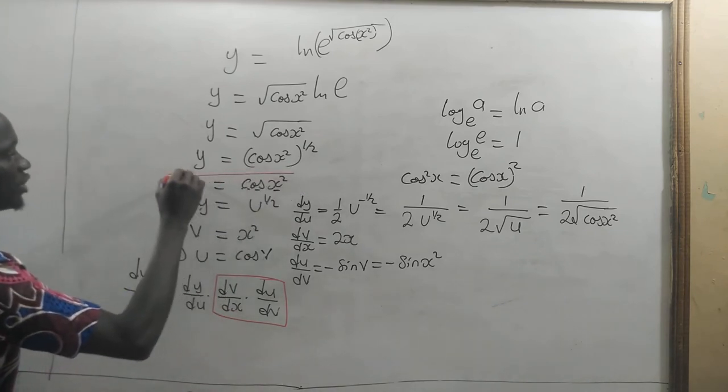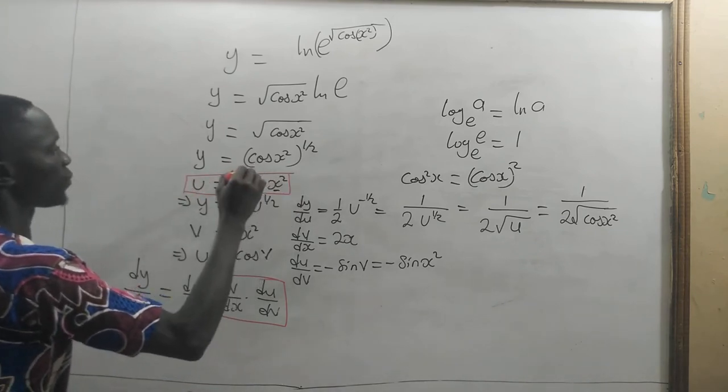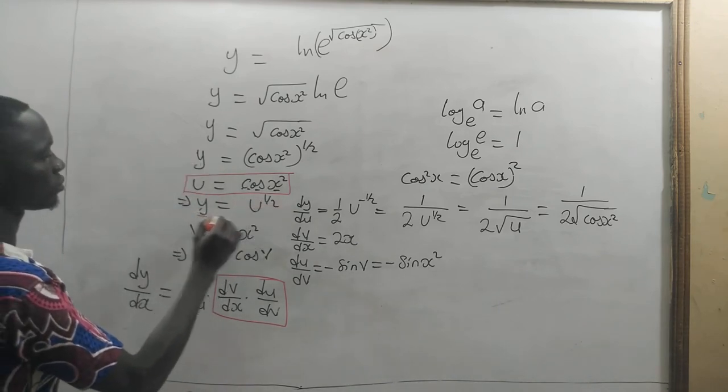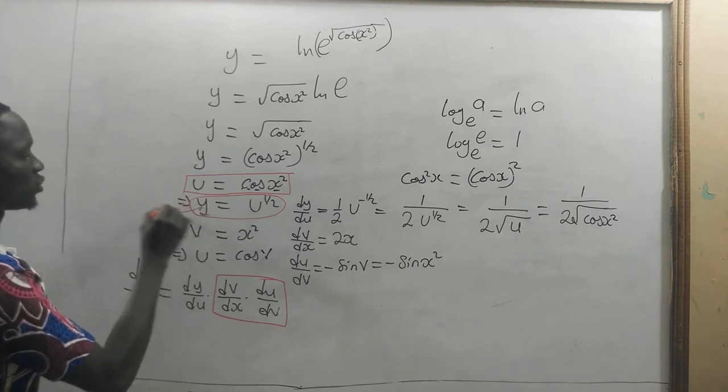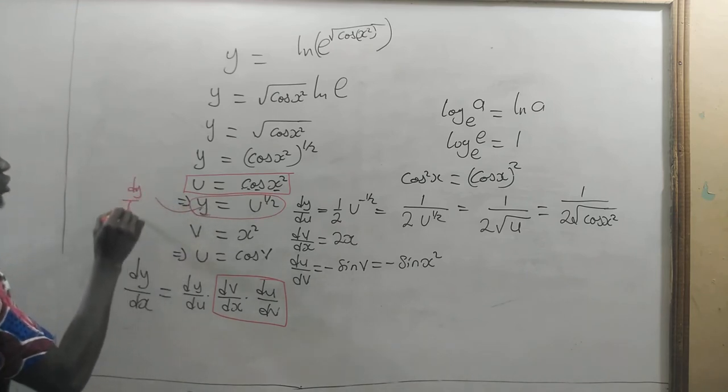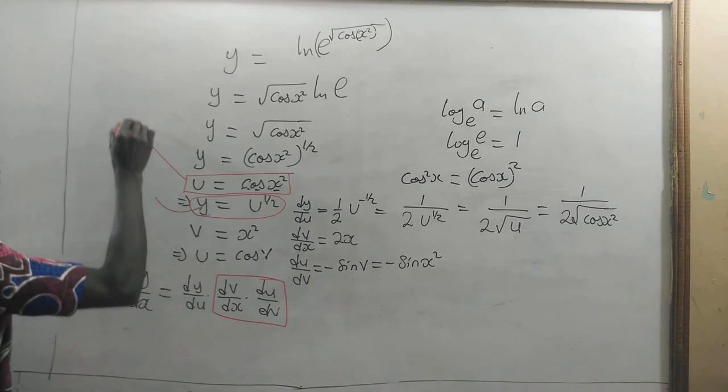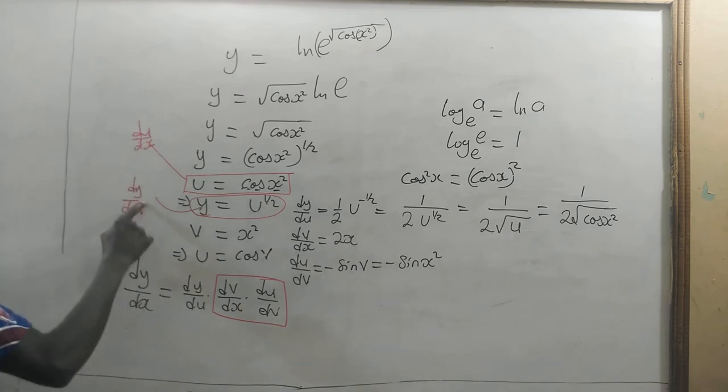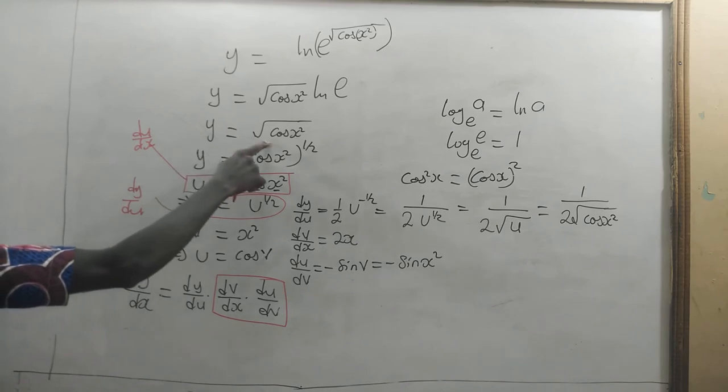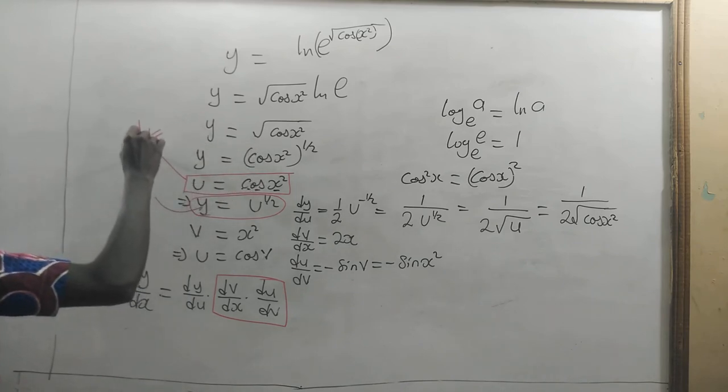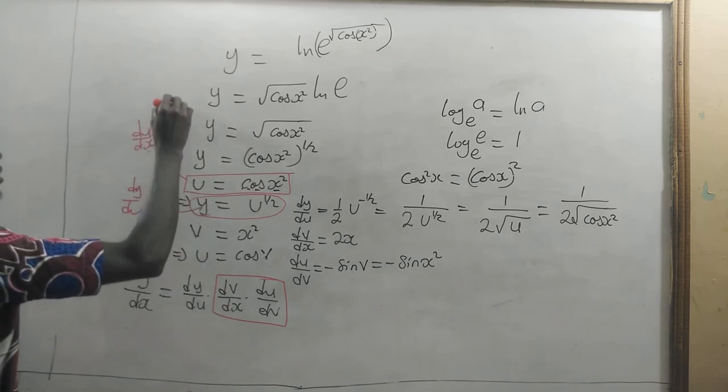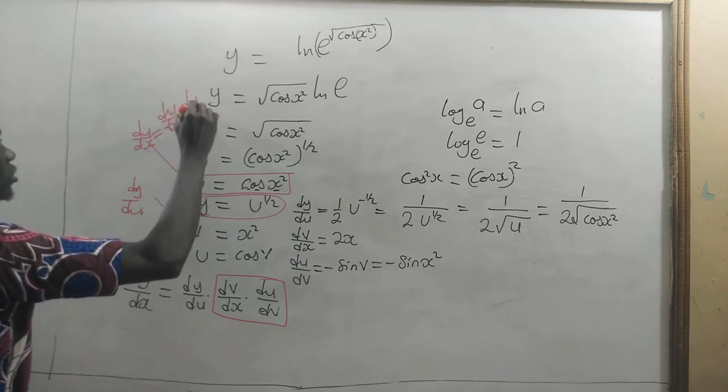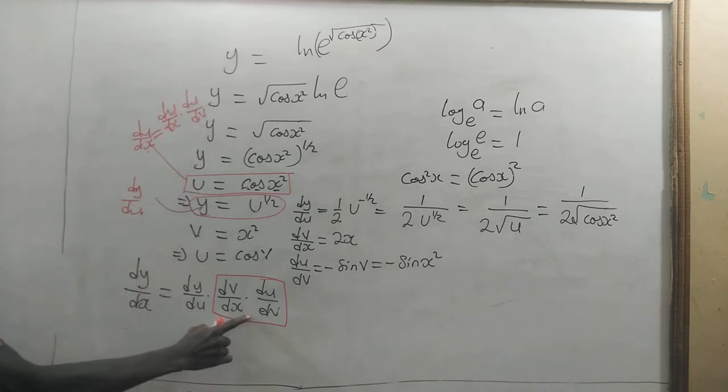Here, you have to find dy/du and then here, you have to find du/dx. So if you multiply these two together, you get dy/dx. And this du/dx will be given by dv/dx times du/dv. That is what we have here.